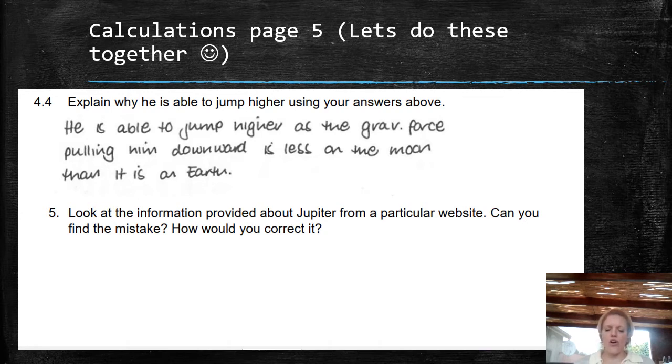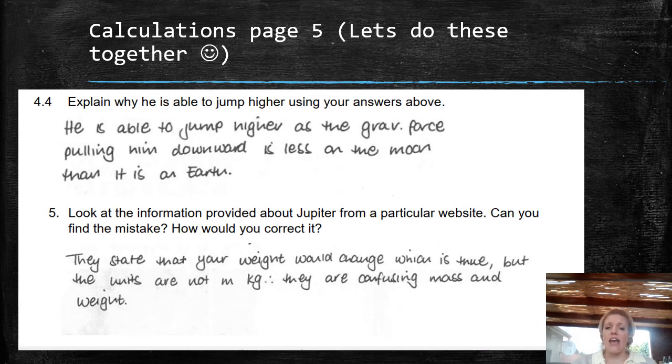Then at the bottom of the page, there is a few facts on Jupiter. I hope you please read those facts. And let's see if you can answer the question. It says there, look at the information provided about Jupiter from this website. Can you find the mistake and how would you correct it? So, there is one thing that's correct here and then there's also another problem. There's like one error. So there's one thing I want you to identify as correct and one that is incorrect. So, the answer that I've written down is that they state that your weight could change which is true. The weight could change because remember that gravitational acceleration but the units are not in kilograms. They are confusing mass and weight.